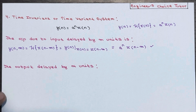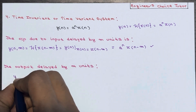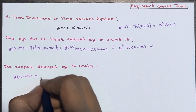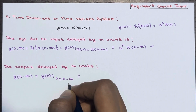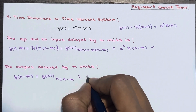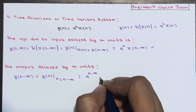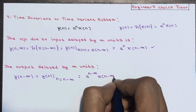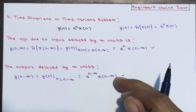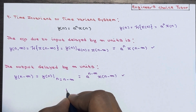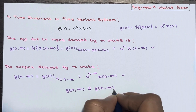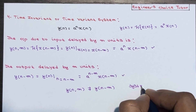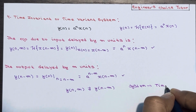Now we calculate the output delayed by m units: y(n−m), which means replacing n with n−m everywhere, giving a^(n−m) · x(n−m). Comparing the two results, a^n · x(n−m) ≠ a^(n−m) · x(n−m), so y(n, m) ≠ y(n−m). Therefore the system is time variant.